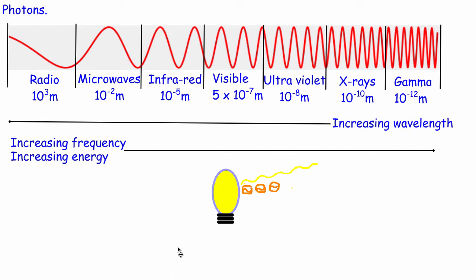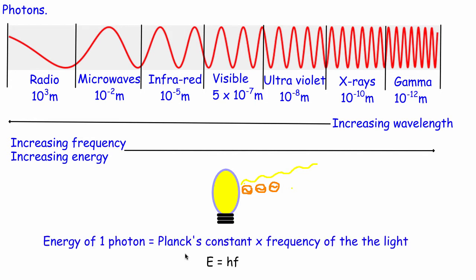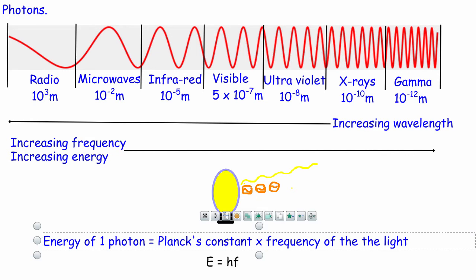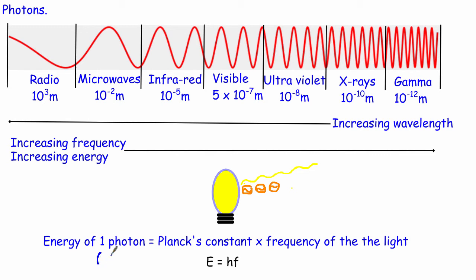Einstein went further, linking the energy of these photons with the frequency of the wave. He said the energy of one photon is proportional to the frequency of light, and the constant of proportionality he called Planck's constant. So E equals h times f: energy in joules, frequency in hertz, and Planck's constant h is 6.63 times 10 to the power of minus 34 joule seconds.